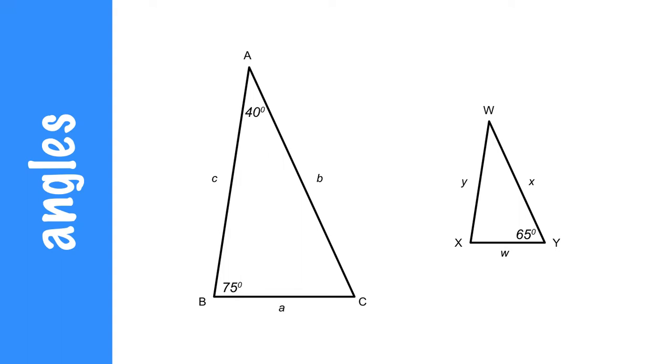The first rule of similar triangles is that the angles are going to be the same. So B and X are going to be exactly the same, which means X is going to be 75 degrees. A and W need to be the same, so they'll be both 40 degrees. And Y and C will be the same, so they're both 65 degrees. Corresponding angles are exactly the same when you have two similar triangles.